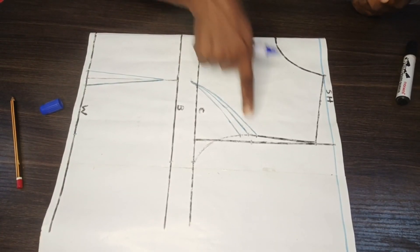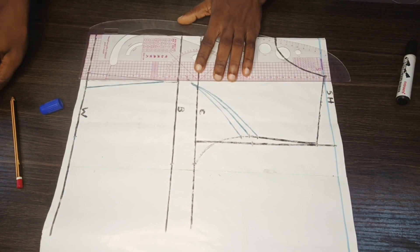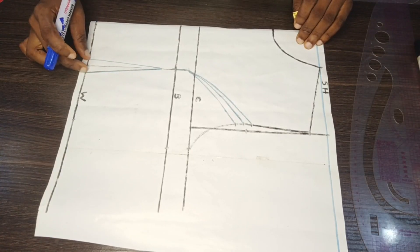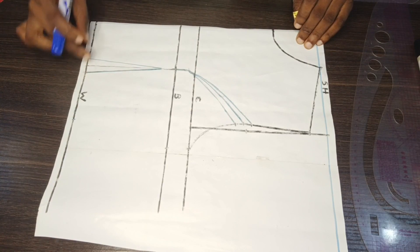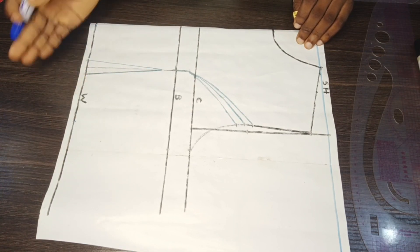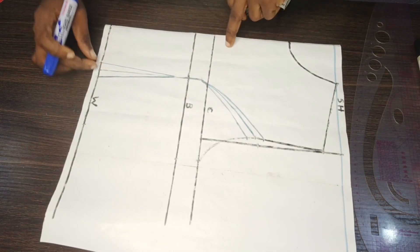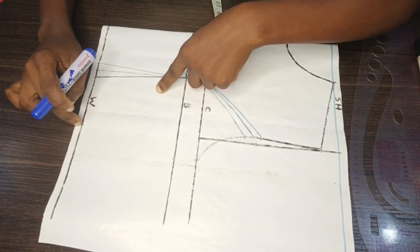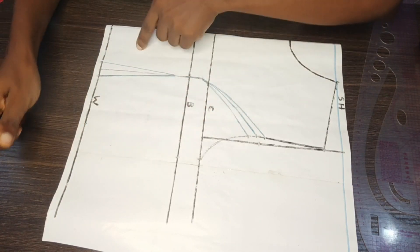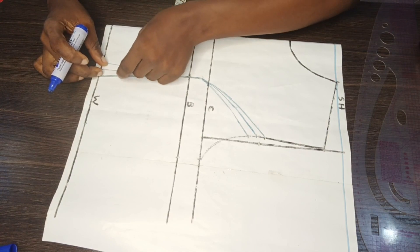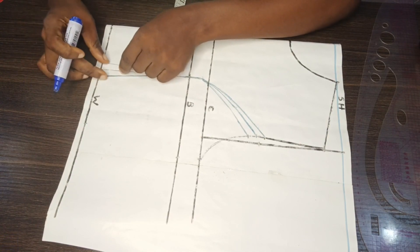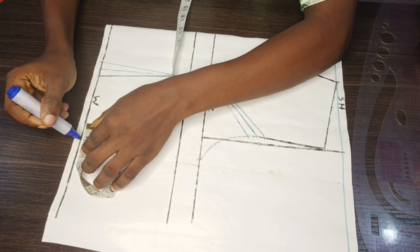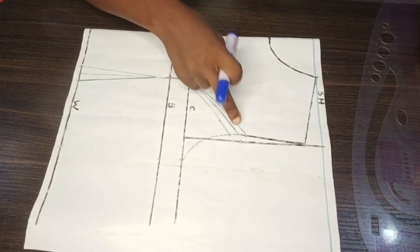Now moving on to dart replacement. If we do not replace the dart, our waist measurement will be shorter by 1 inch on each side. We have a dart of 1 inch here, and we already marked our waist measurement divided by 4. So we're going to replace this: for the normal basic dart we are sewing it inwards, so we place back the 1 inch.